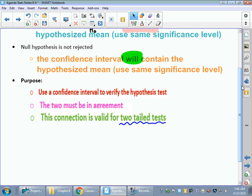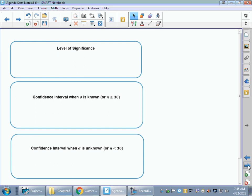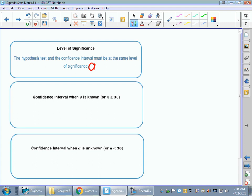If we do not reject the H sub O, but our mean is not in that interval, something went wrong, our data is bad, our calculation is bad, something is not right. And this connection, we only do this for two-tailed tests. So I know that we are doing two different methods of hypothesis testing. We could do the traditional method with a critical value, or we could do the P-value with the area under the curve. The hypothesis test and the confidence interval must be at the same level.